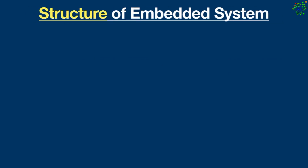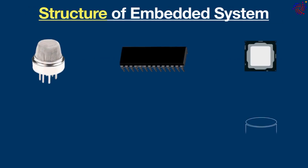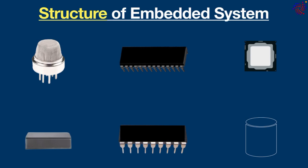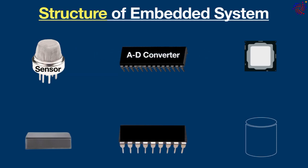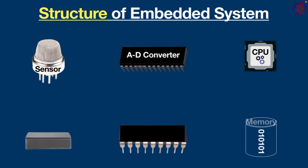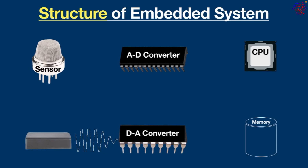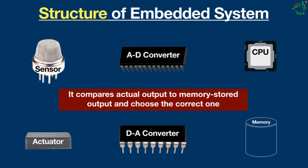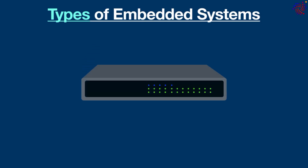Now let's talk about the structure. The basic structure of an embedded system includes the following elements: a sensor, which measures and converts a physical quantity to an electrical signal; an analog-to-digital converter (ADC), which converts the analog signal sent by the sensor into a digital signal; a processor, which processes digital signals and stores them in memory; a digital-to-analog converter (DAC), which changes the digital data fed by the processor back to analog data; and finally, an actuator, which compares the actual output to the memory-stored output and selects the correct one.